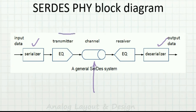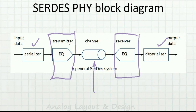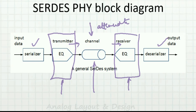We have serializer and deserializer — we understand those. We understand the channel. But now we also have what is known as the transmitter and receiver equalizers, which enhance the signal before transmitting — increasing signal power — and at receiving, increasing signal quality, because the channel will attenuate the signal. We have to boost the signal after serialization and before deserialization. These are called equalizers.